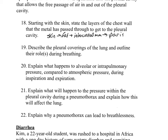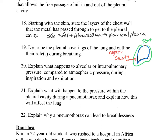Question nineteen: describe the pleural coverings of the lung and outline their roles during breathing. The lungs are covered in two layers of pleura. The visceral layer covers and is adherent to the lung tissue. The parietal layer lines the inner surface of the thoracic wall and the diaphragm, and it is continuous with the visceral pleura at the hilum of the lung. The pleural cavity lies between the two layers and contains serous fluid that reduces friction and allows the layers to slide over each other. The pleural layers allow the lungs to follow the motion of the diaphragm and chest wall. The pressure between the pleural layers is normally negative, so the lung effectively sticks to the inner surface of the chest wall.